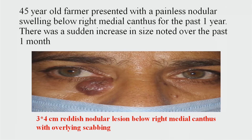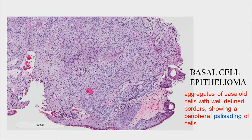Next, a 45-year-old farmer presented with a painless nodular swelling below the right medial canthus for the past one year, with sudden increase in size over the past one month. On examination, there was a 3 x 4 cm reddish nodular lesion below the right medial canthus with overlying scabbing. On histopathology, a diagnosis of basal cell epitheloma was made. Aggregates of basaloid cells with well-defined borders showing peripheral palisading of cells are characteristic of basal cell epitheloma.